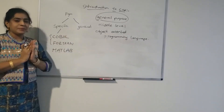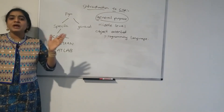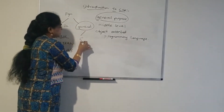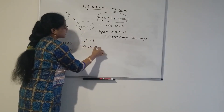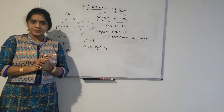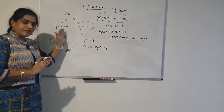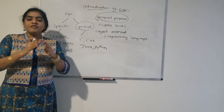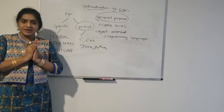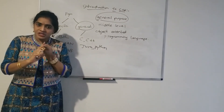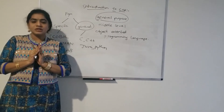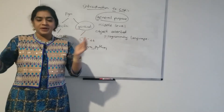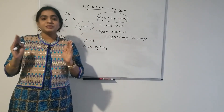Coming to general purpose, we will learn a single language and develop many types of applications — that is called general purpose. Some examples of general purpose languages are C, C++, Java, and Python. Before C, most programming languages were specific purpose. After C, all languages are general purpose — we learn a single language and develop so many applications, because the user has to develop so many different applications.